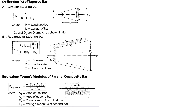For a tapered circular bar, delta L = PL/AE. For a uniform cylindrical rod, the formula is PL divided by (π/4)·D²·E, which equals 5/4D²·E.